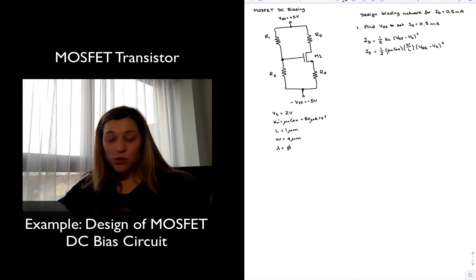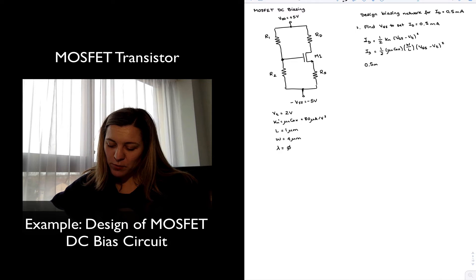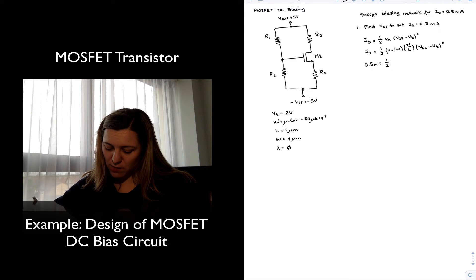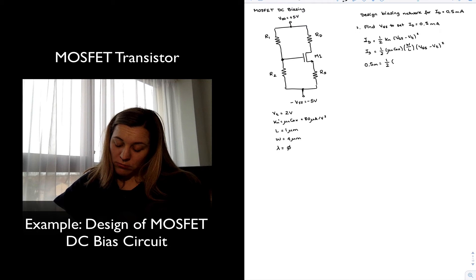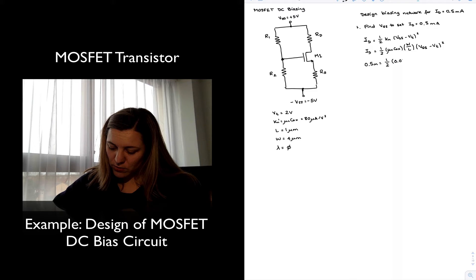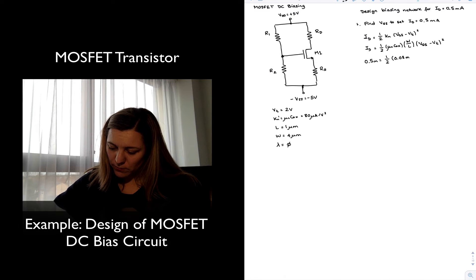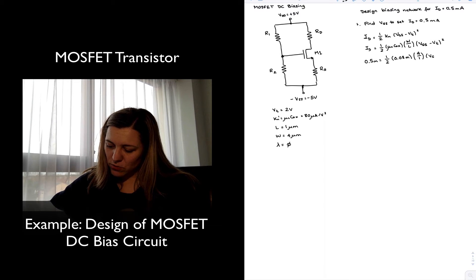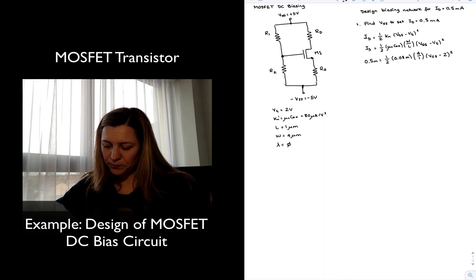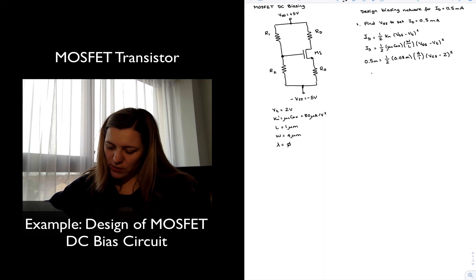Substituting values and solving for VGS: I want 0.5 milliamps, so 0.5 milli equals one half times 0.08 milli times (W/L = 4/1) times (VGS minus 2 volts) squared. Solving for VGS gives VGS equal to 3.77 volts. This is the value of VGS that yields a drain current of 0.5 milliamps.